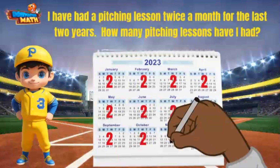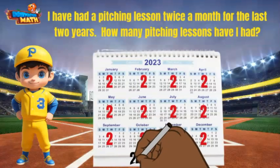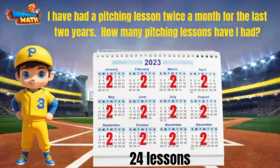Now it's time to add all of those 2s together. I will count by 2s to make it easier: 2, 4, 6, 8, 10, 12, 14, 16, 18, 20, 22, and 24. I had 24 pitching lessons during the year.